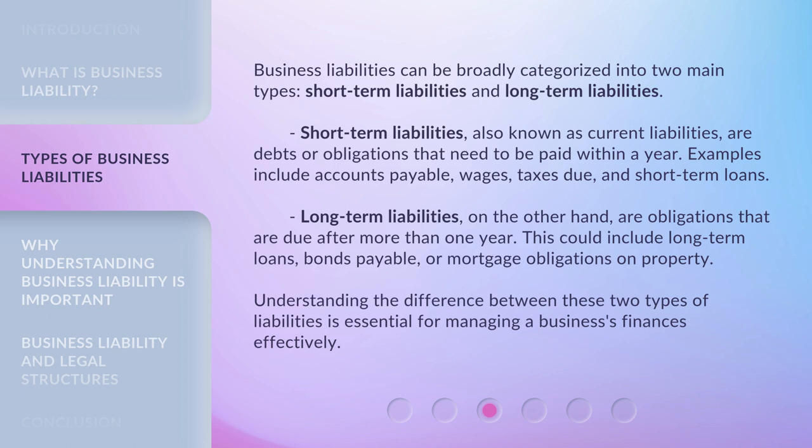Long-term liabilities, on the other hand, are obligations that are due after more than one year. This could include long-term loans, bonds payable, or mortgage obligations on property. Understanding the difference between these two types of liabilities is essential for managing a business's finances effectively.